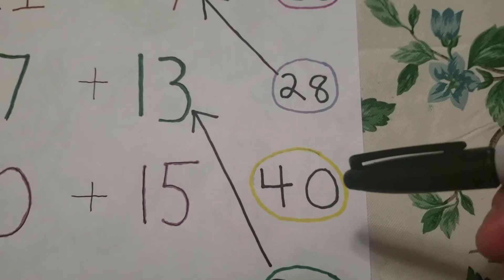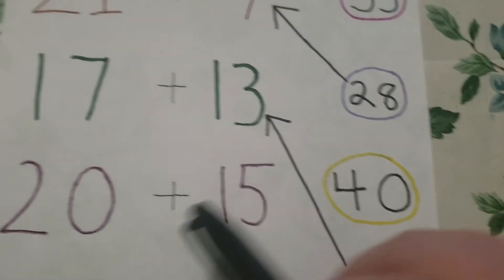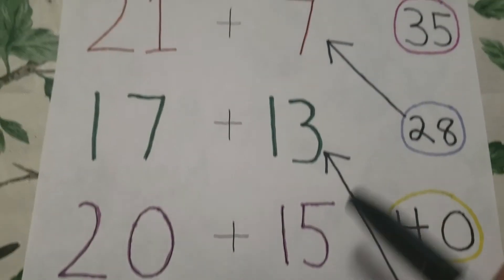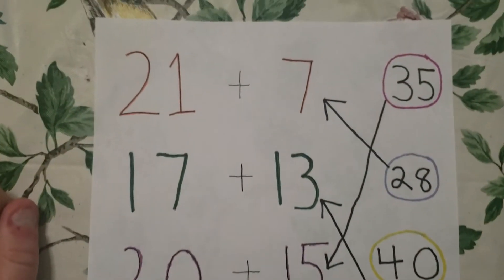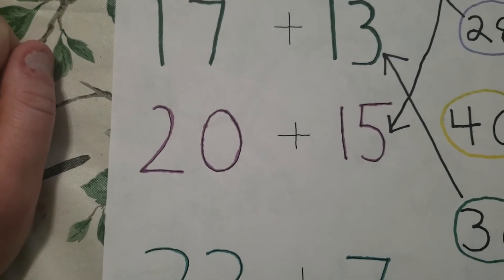I'm going to draw an arrow from 40 to... Wait. Wait, wait. It's not 20 plus 15? Oh, it's 35. I'm sorry. There we go. I drew the arrow from 35 to 20 plus 15.